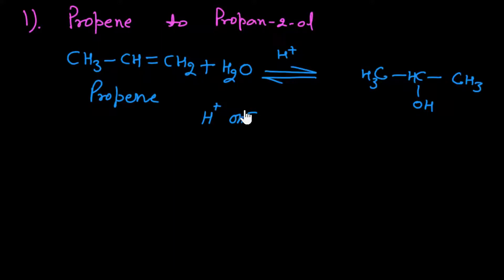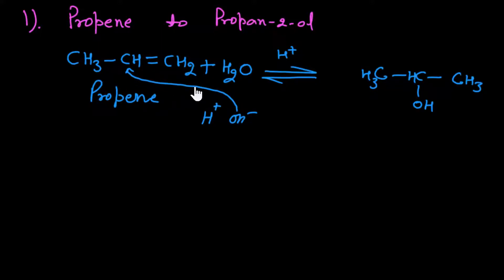Markovnikov's rule applies to unsymmetrical alkenes: the negative part of the attacking reagent goes to the carbon which carries the lesser number of hydrogen atoms, and the double bond breaks accordingly.